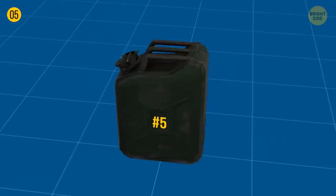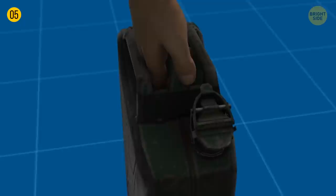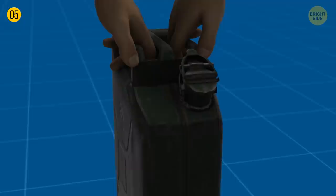As for handles, jerry cans have three of them. It's a smart designer move, so when you carry it alone, you use only the central handle to distribute the weight evenly. But your friend wants to help you out. Each of you grabs the side handle.